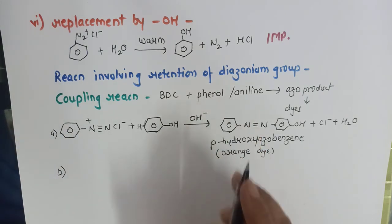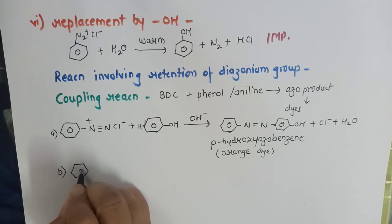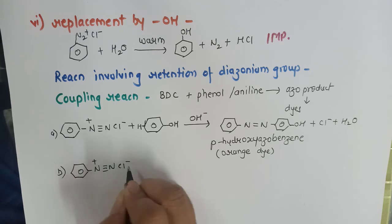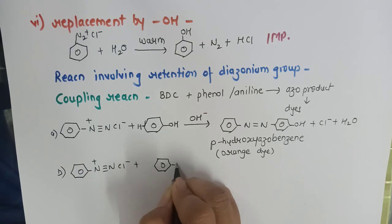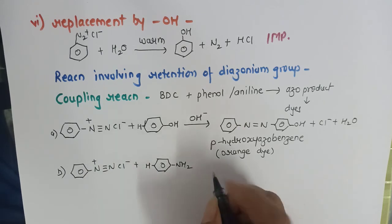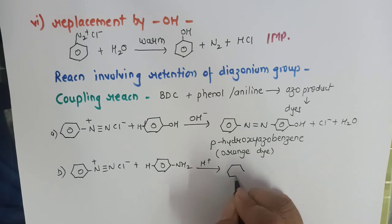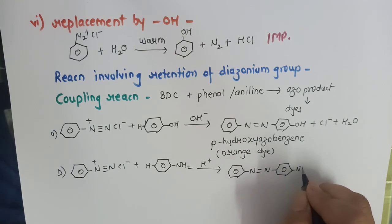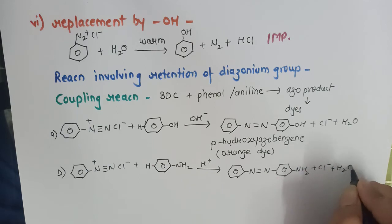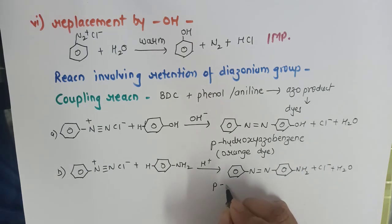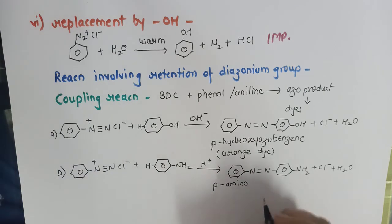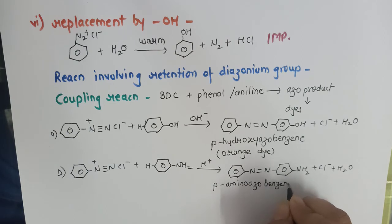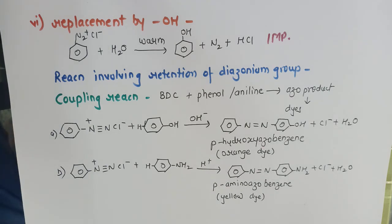Second coupling reaction: BDC when treated with aniline — hydrogen is removed in the presence of acidic medium — coupling takes place, along with removal of chloride and H2O. The product is para-amino azobenzene, which is a yellow colour dye. Commercially, these two coupling reactions are very important because they help produce colour dyes.